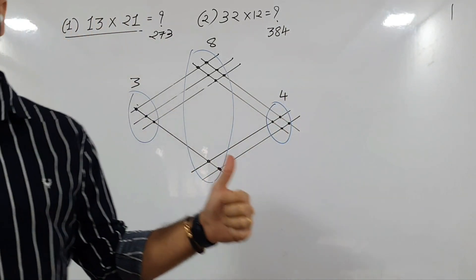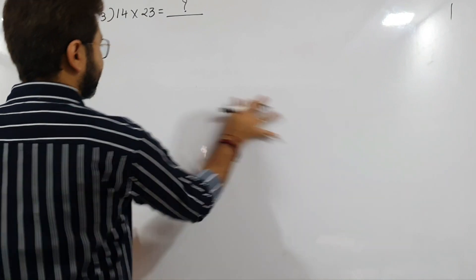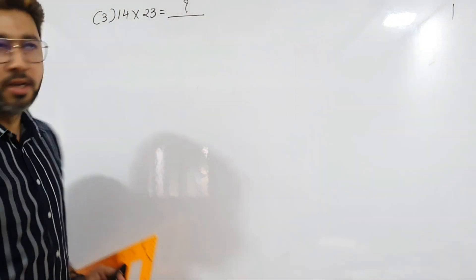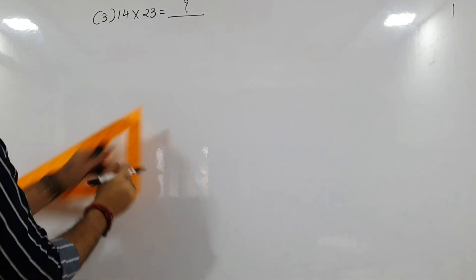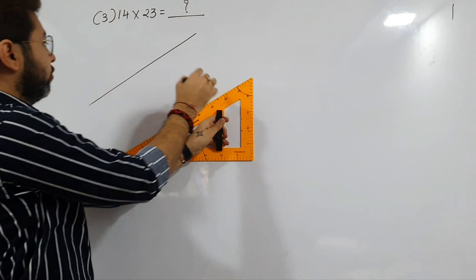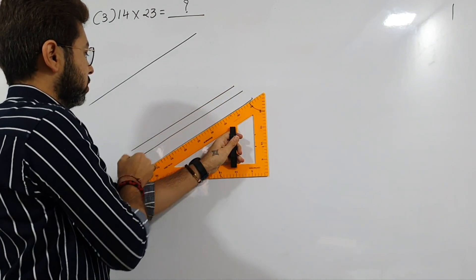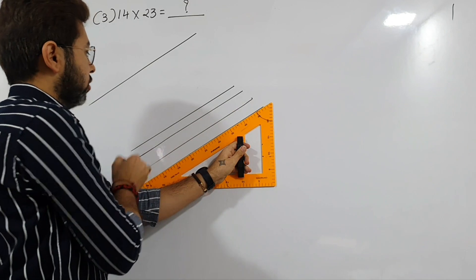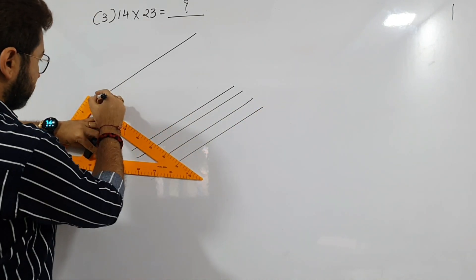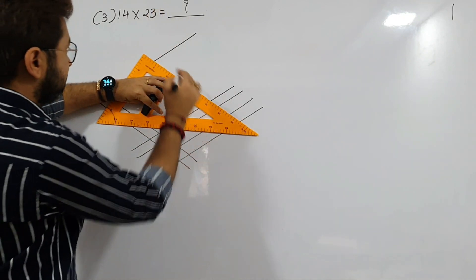Now let's take a slightly more complex example: 14 cross 23. The first digit is 1, so draw one line. The second digit is 4, so after giving some space, draw four lines: one, two, three, and four. The third digit is 2, so draw two lines: one and two. The last digit is 3, so draw three lines.